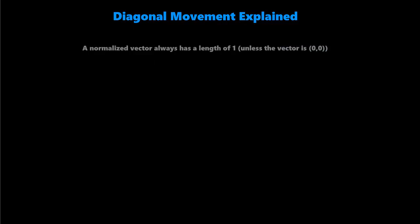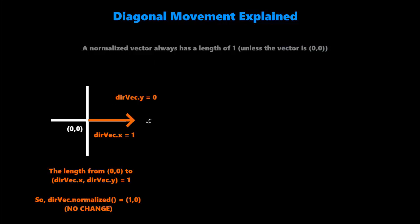Anyways, let's take a look at horizontal movement only. So in this case, we set this dirvec, this vector that we created, we set the x component equal to positive 1, and we set the y component equal to 0. That means we're just moving to the right.